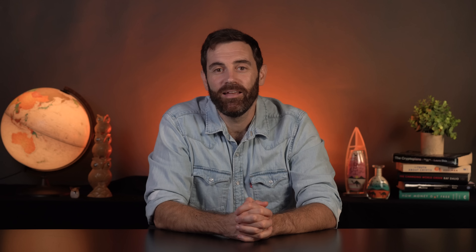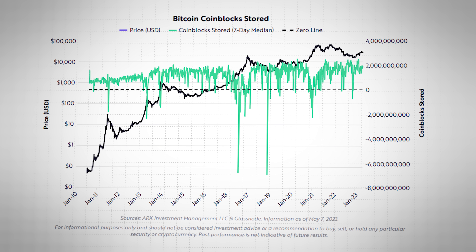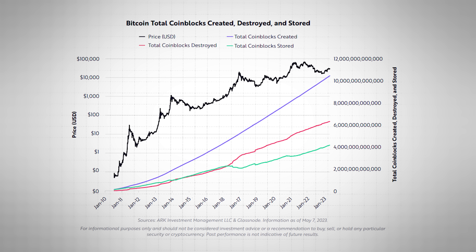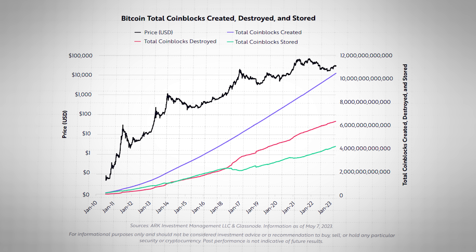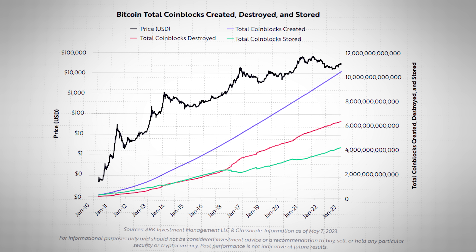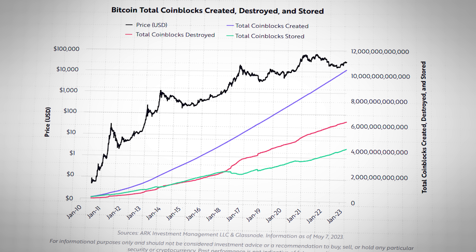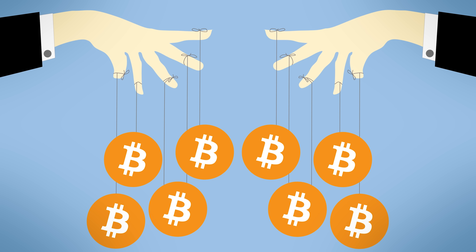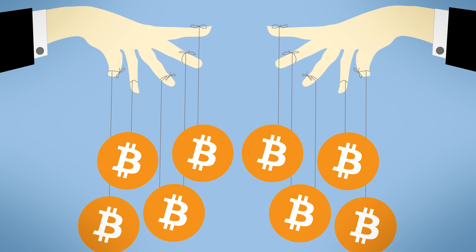The number of coin-blocks stored has a very high correlation to BTC's peaks and troughs. When the number of coin-blocks stored goes below zero, chances are that BTC is hitting its high or its low. The total number of coin-blocks destroyed started outpacing the total number of coin-blocks stored in 2017, suggesting that more Bitcoins started becoming active around this time — and to us, this suggests that more institutions started becoming active in BTC around this time, something that's been detected by other forms of analysis, namely technical analysis such as Wyckoff.